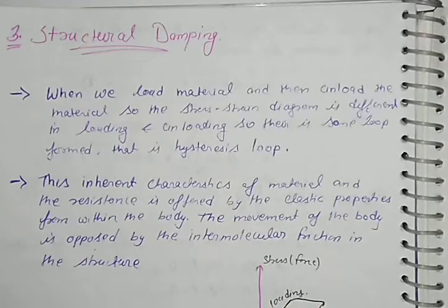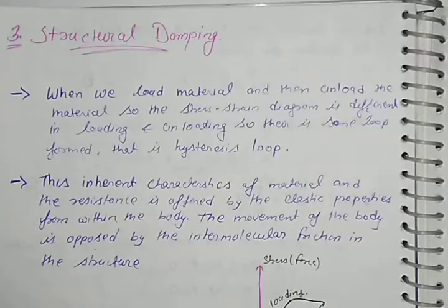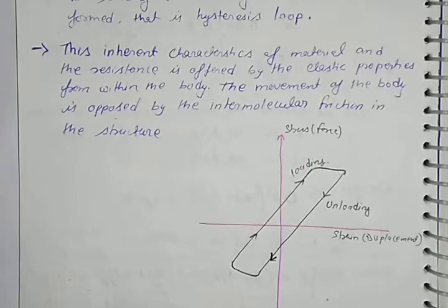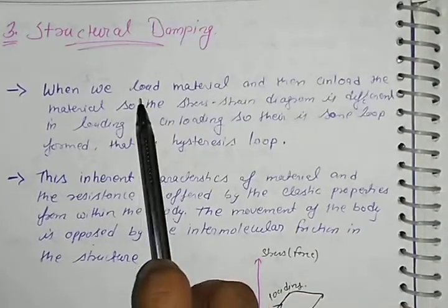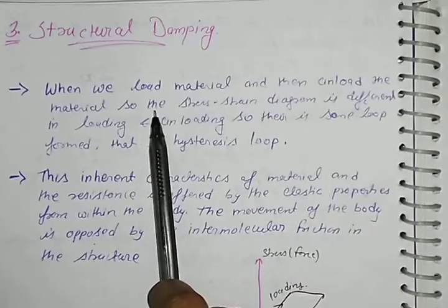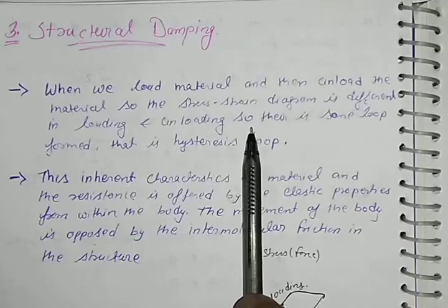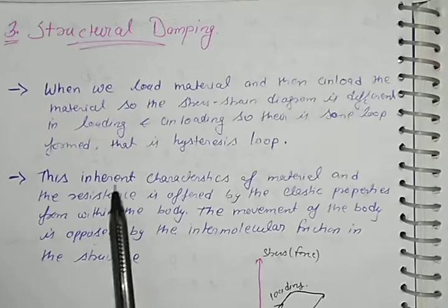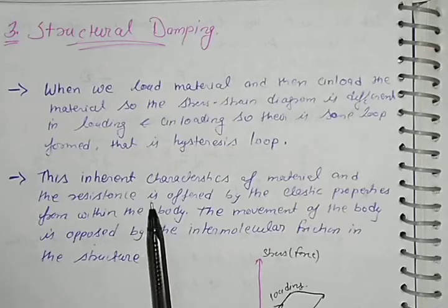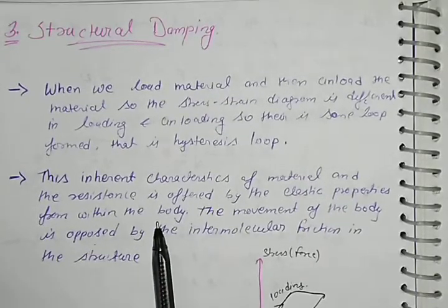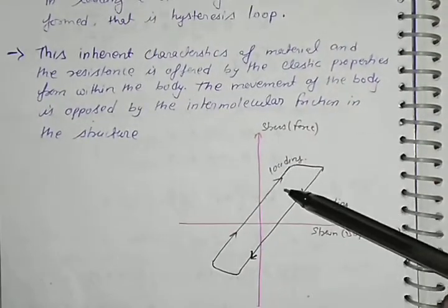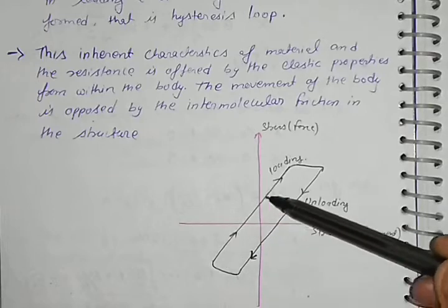We already discussed structural damping in Unit 1 on free vibration — what structural damping is and how it makes a loop in loading and unloading conditions. When we load a material and then unload it, the stress-strain diagram differs between loading and unloading, forming a loop called the hysteresis loop. This is an inherent characteristic of the material; resistance is offered by the elastic properties from within the body, and the movement is opposed by intermolecular friction.